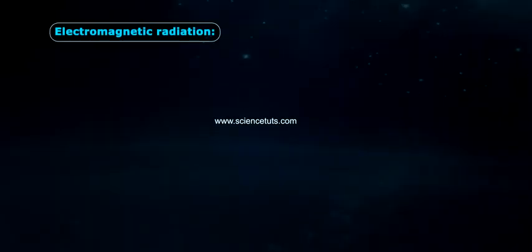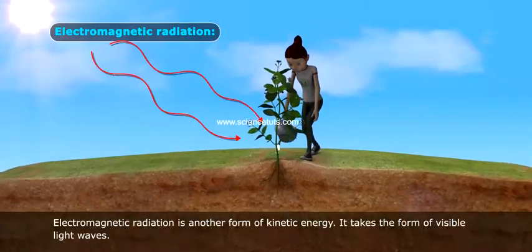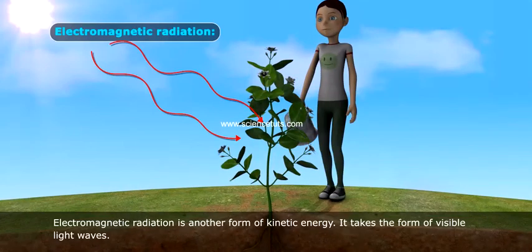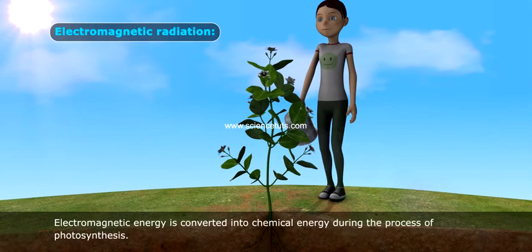Electromagnetic radiation is another form of kinetic energy. It takes the form of visible light waves. Electromagnetic energy is converted into chemical energy during the process of photosynthesis.